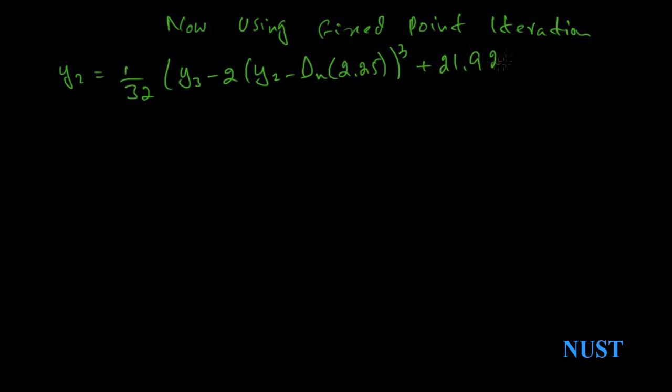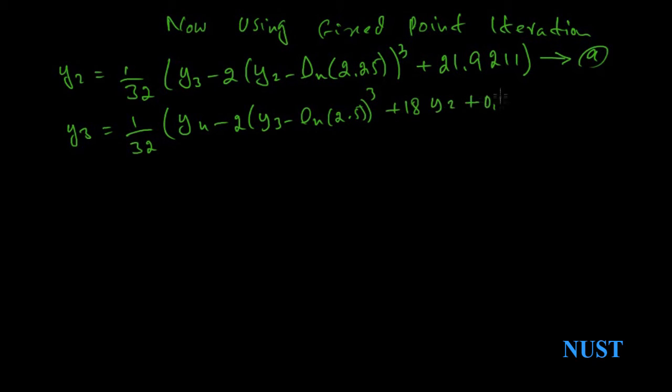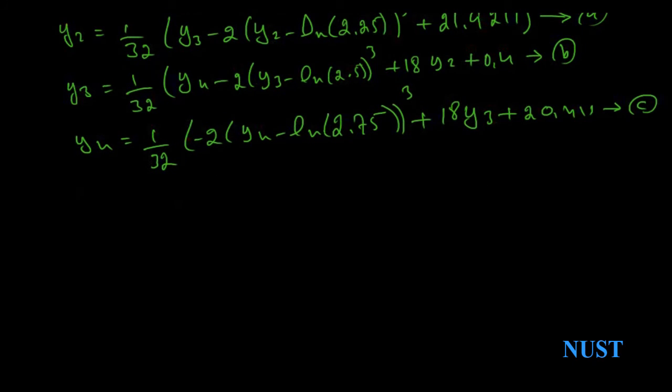If I'm using fixed point method, I need to separate these variables. Then by plotting the table and using a calculator, we can find the unknown parameters. If you don't know fixed point method and the use of a calculator, I advise you to go back and see the corresponding tutorials.